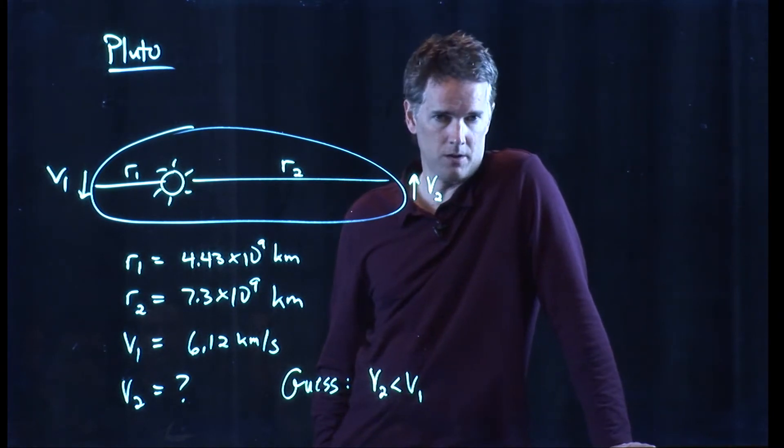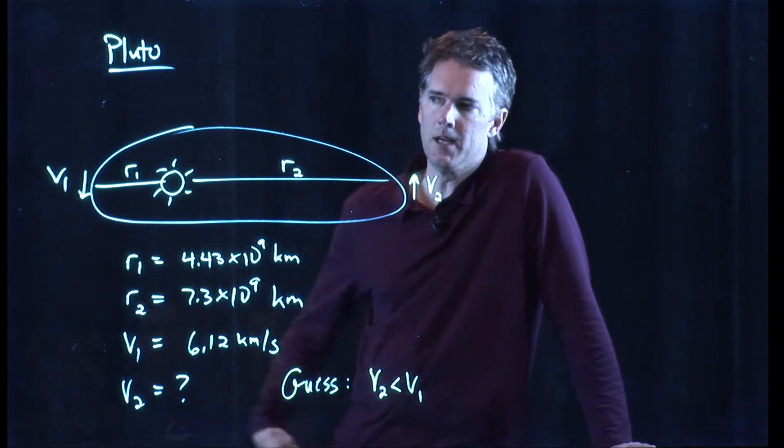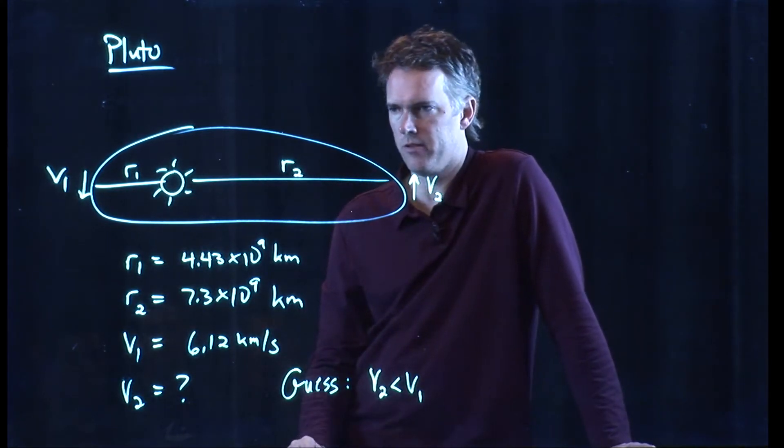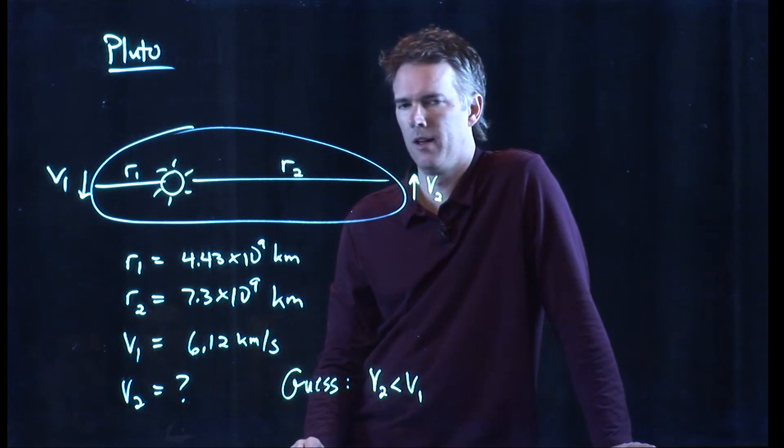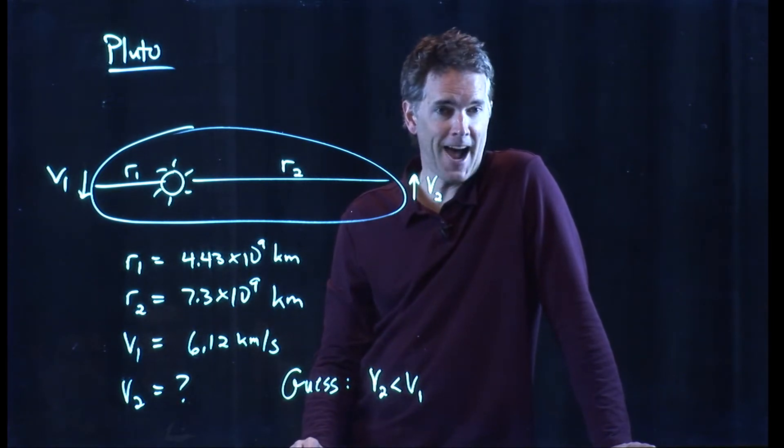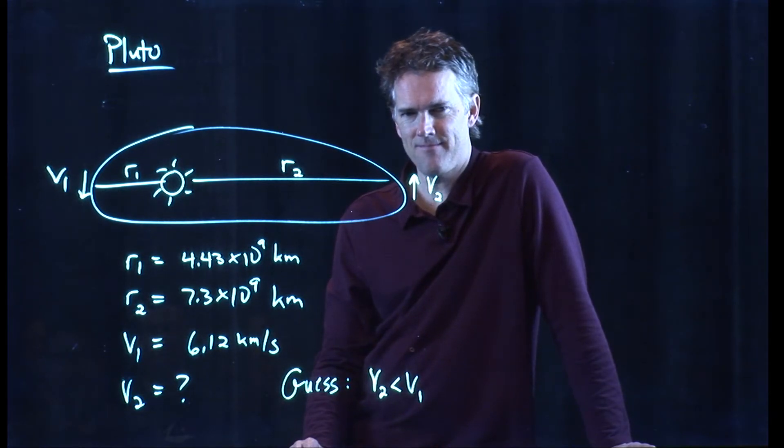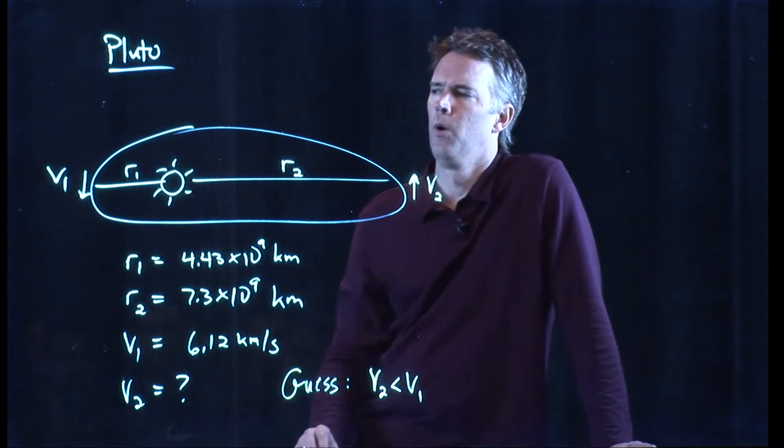Right, exactly right. If Kepler's second law is going to hold, then equal areas in equal time says that V2 has to be smaller than V1. Exactly right. As a follow-up, how do we calculate it? I'm not sure. Okay, well.